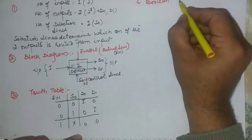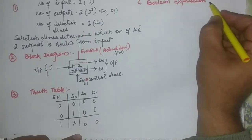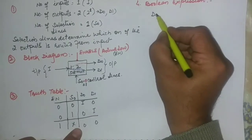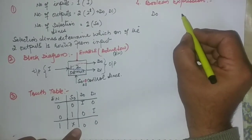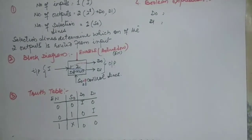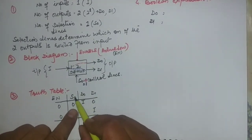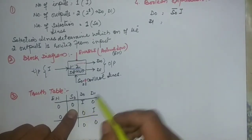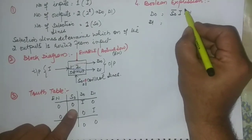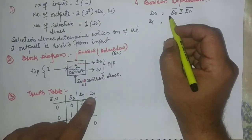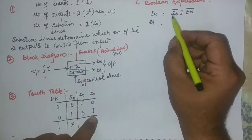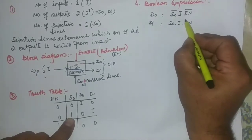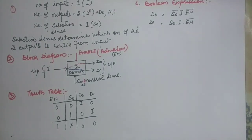The fourth point is the Boolean expression, derived from the truth table. We have two outputs so there will be two Boolean expressions. For D0: since S0 is equal to 0, it is S0 complement AND input AND enable complement. For D1: it is S0 AND input AND enable complement. Both functions are active when the enable is at active low.